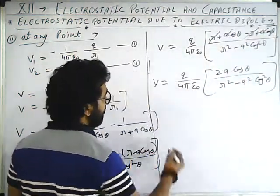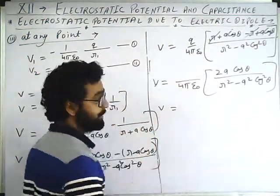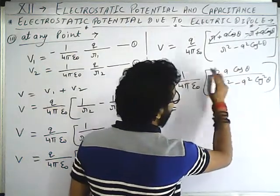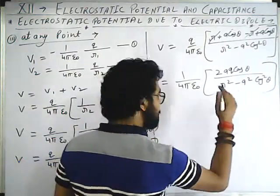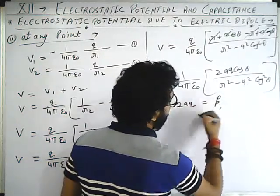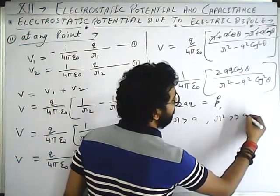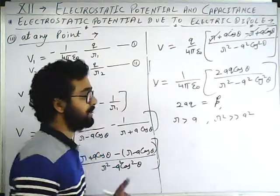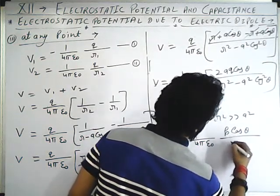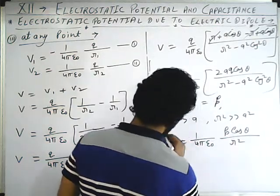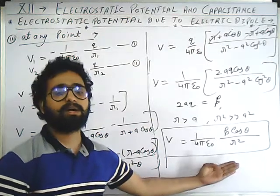Now, since Q times 2a equals the electric dipole moment P, and since r is greater than a, r squared is very much greater than a squared, so we neglect a squared. Therefore V equals one upon four pi epsilon naught into P cos theta upon r squared. This is the required general formula derived in NCERT, and it can be used for any point.